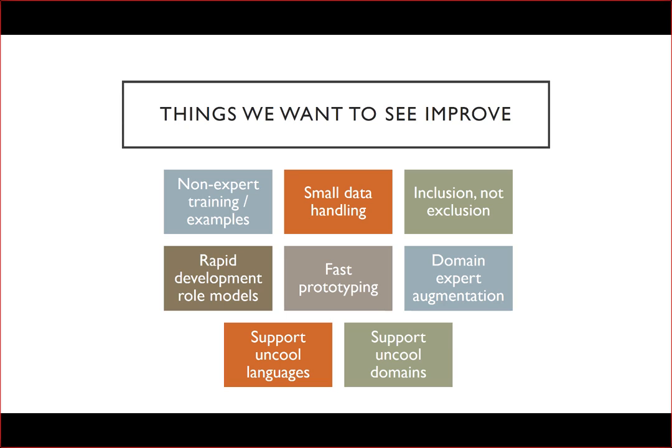Today we're going to see how to create a real, useful piece of deep learning code in seven lines of code. We want to get to the point where it's easy for domain experts to work with deep learning — whether you're working with satellites, analyzing chemical studies, or analyzing fraud at a bank. You are domain experts that we want to enable to use deep learning.